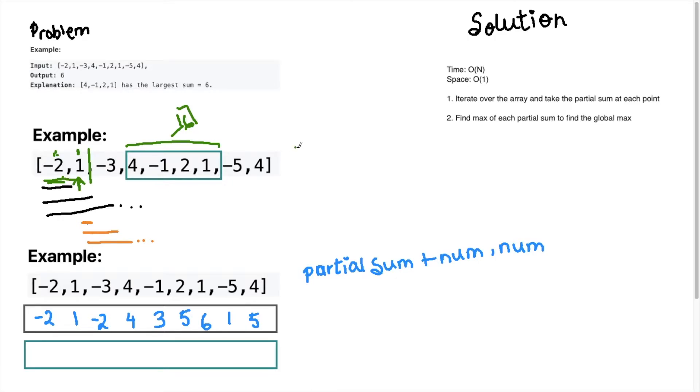So what you need to ask is, is negative two plus one giving me a higher sum than just taking myself, which is the one at this position? And yeah, of course, the answer is one.